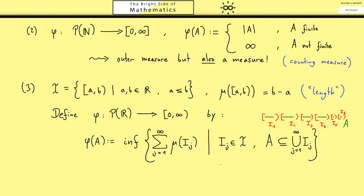That is now the whole definition of phi of A. And now you see where the name 'outer measure' comes from: in the picture and in the definition, this is clearly an approximation from the outside. We choose bigger sets that we can measure from the outside and shrink them together to get an outer bound for A.